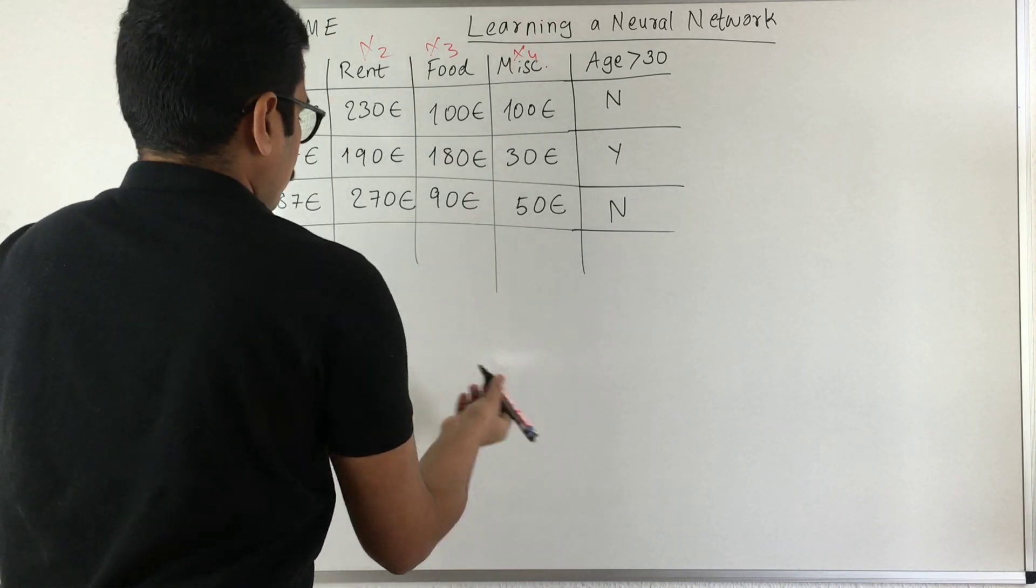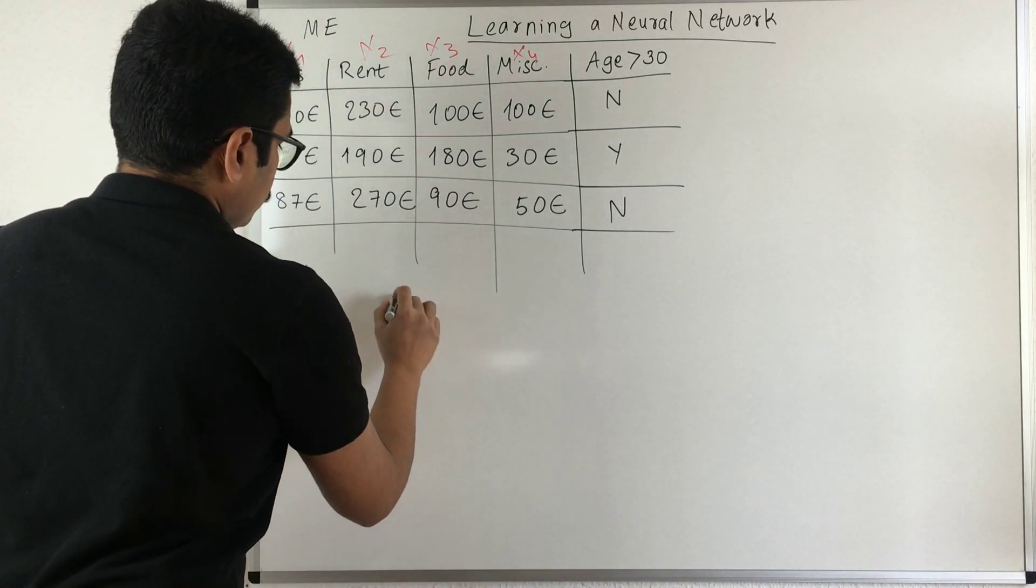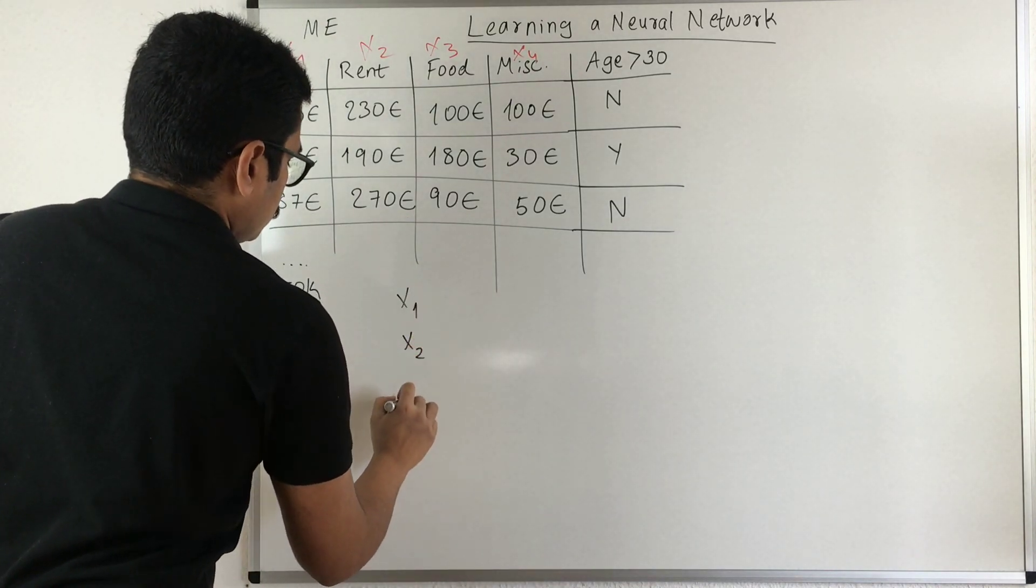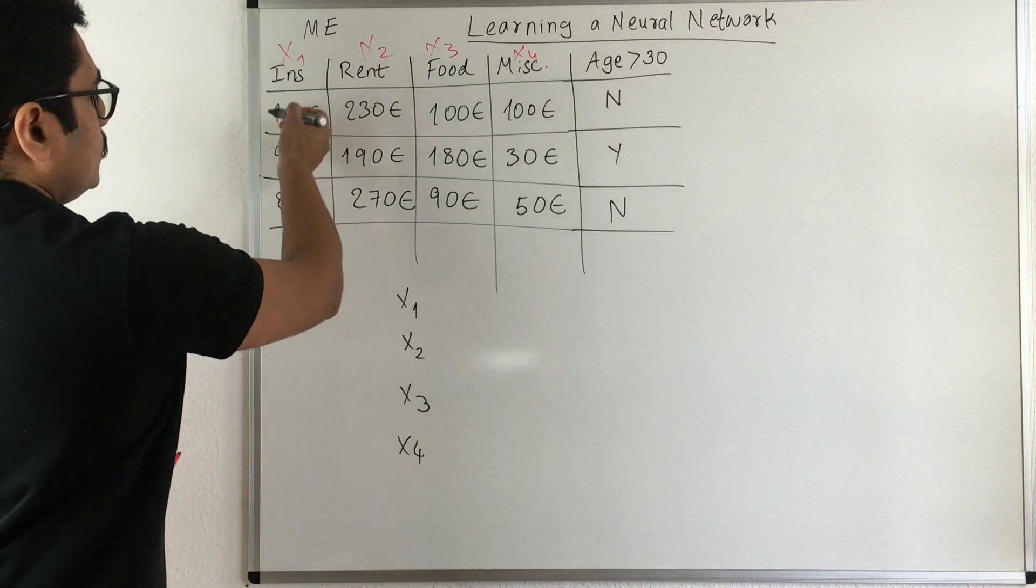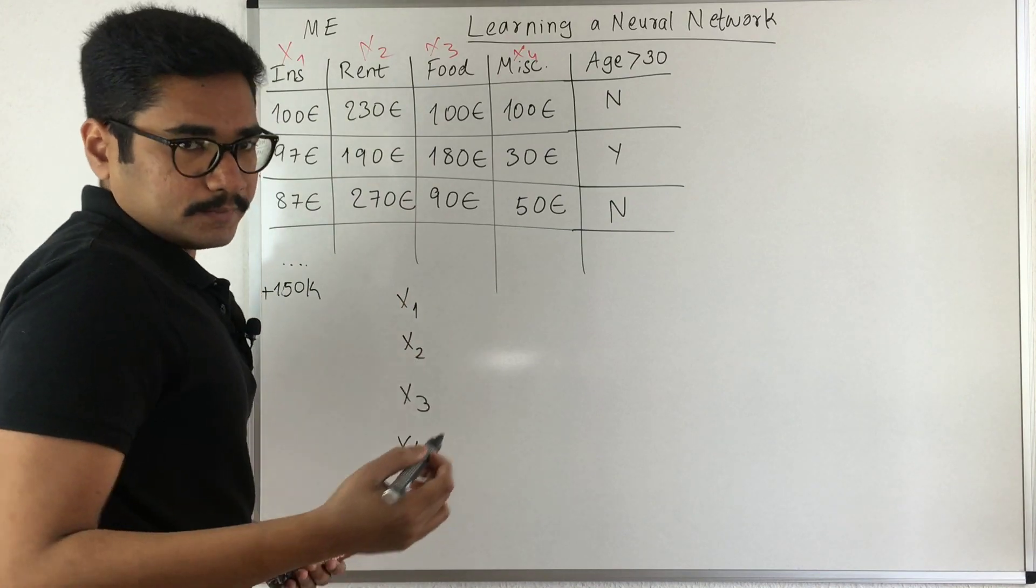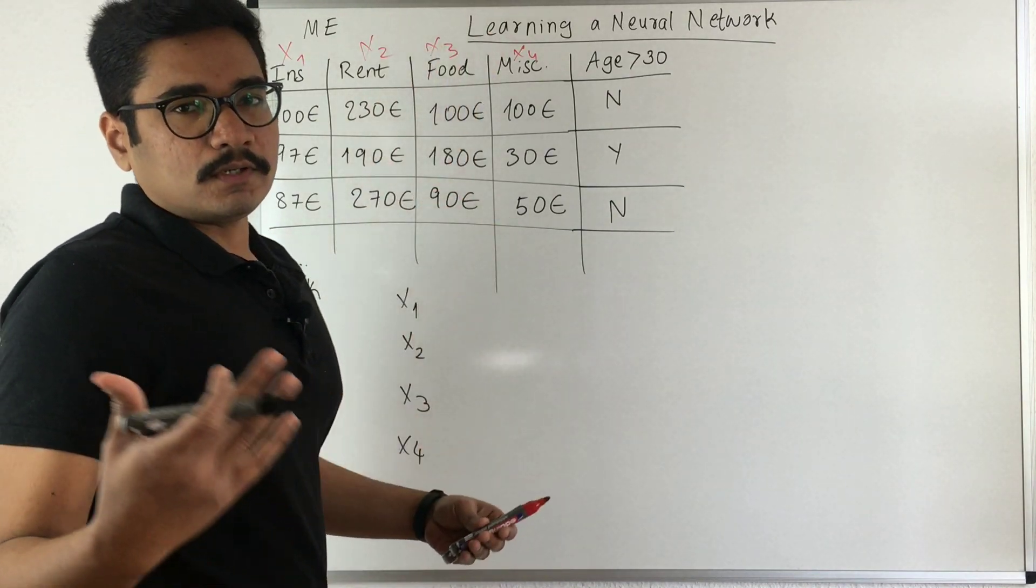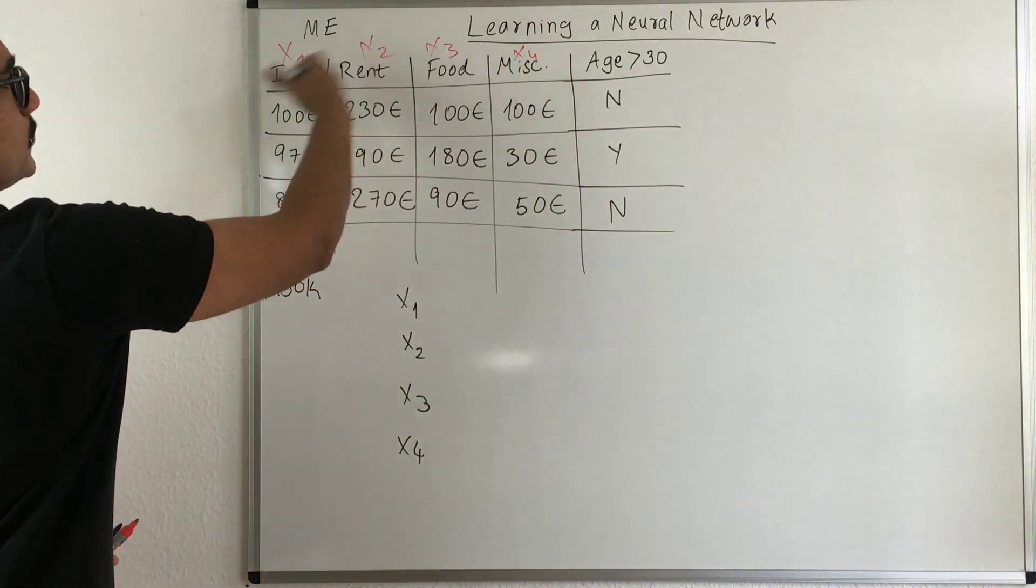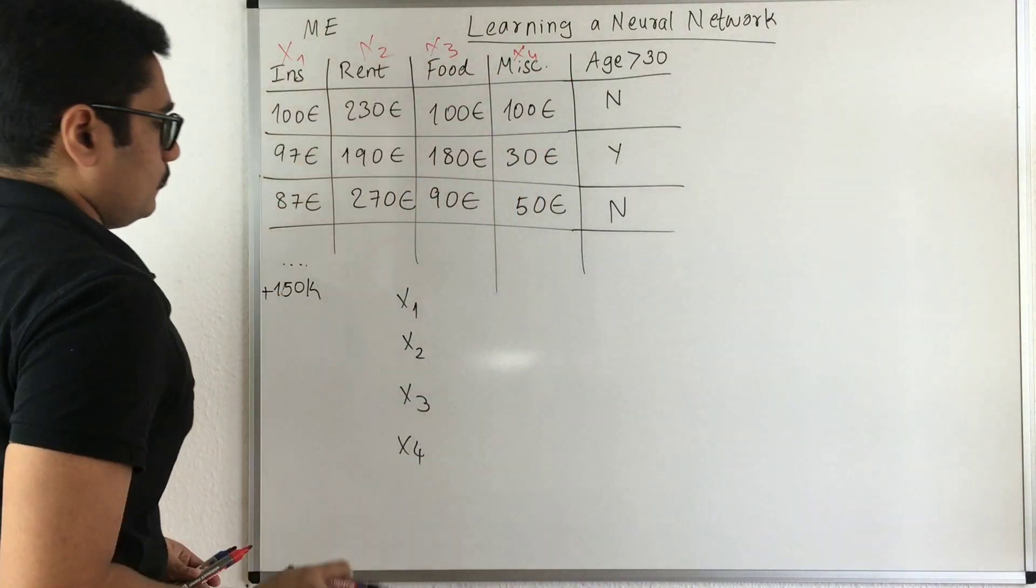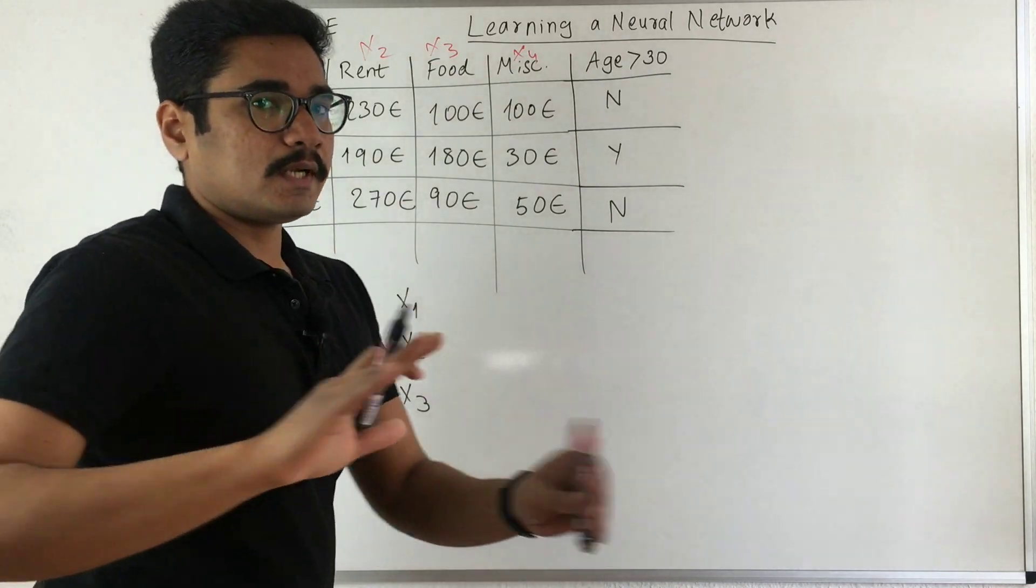Essentially what I have is x1, x2, x3, and x4 - these are my four inputs: insurance, rent, food, and miscellaneous. You can consider miscellaneous as any apparels or any other items you would be buying besides these three attributes. All these attributes are independent.